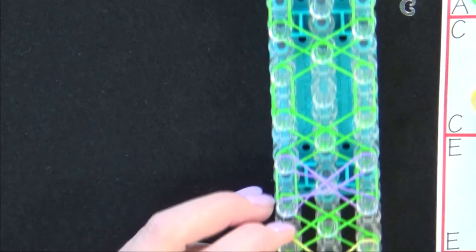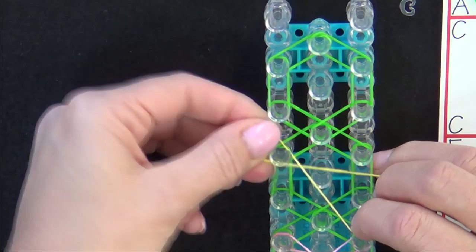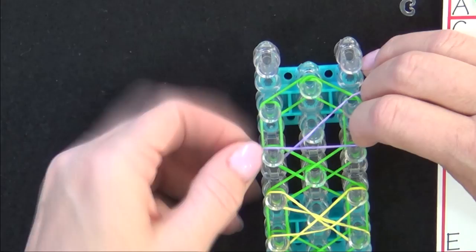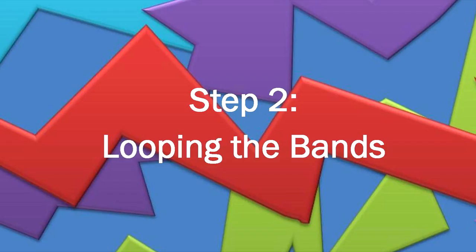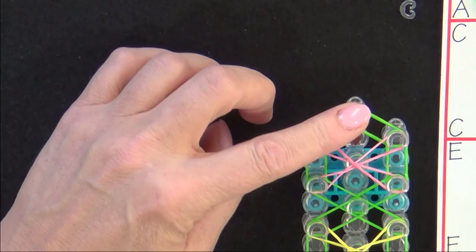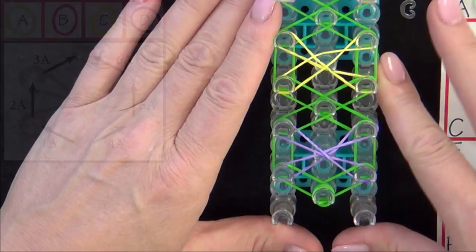Now from here we'll fast forward to the end of the loom. Now we're ready to start looping the bands. Turn your loom so that the red arrow is pointing toward you. Refer to the graphic on your screen as you loop the first six bands.